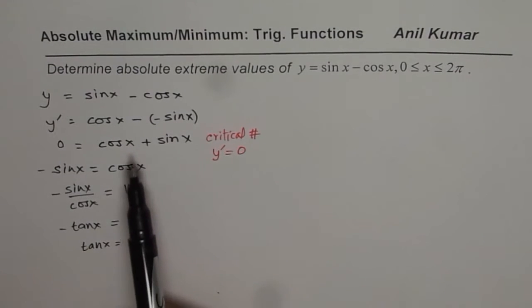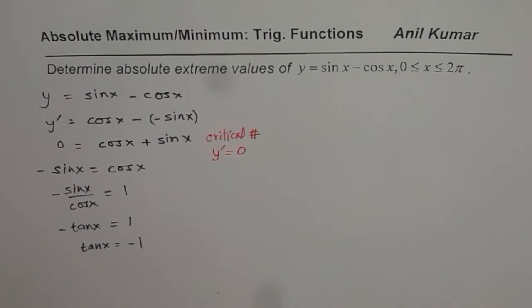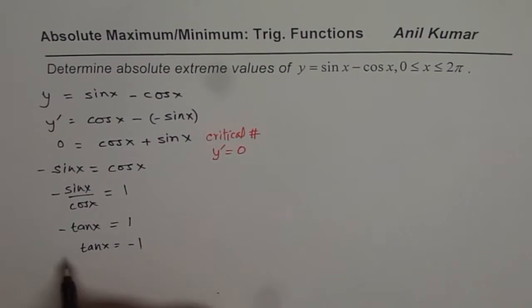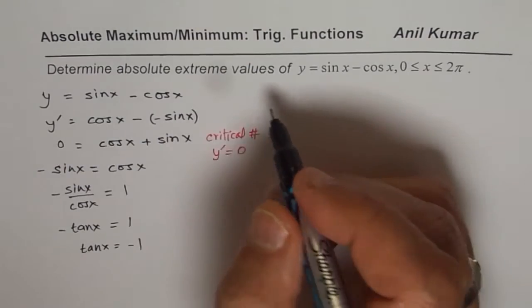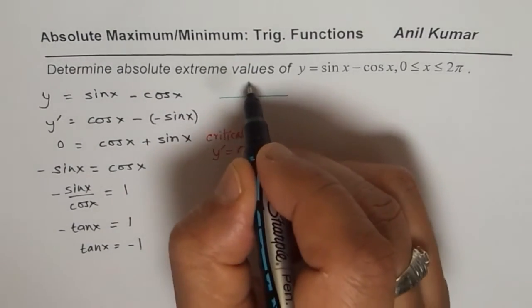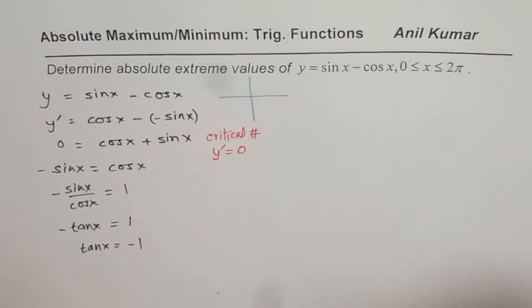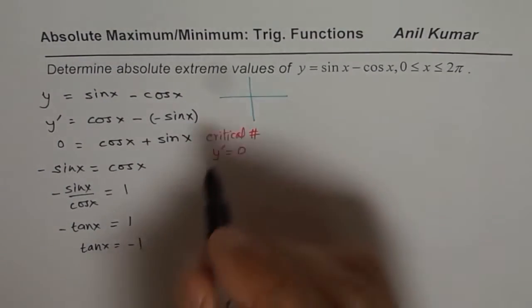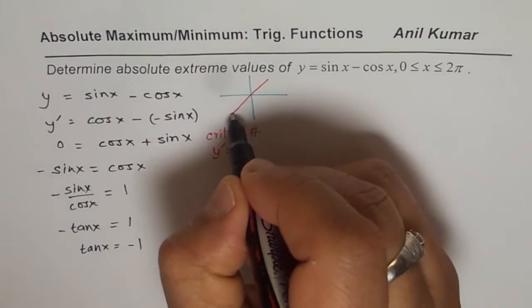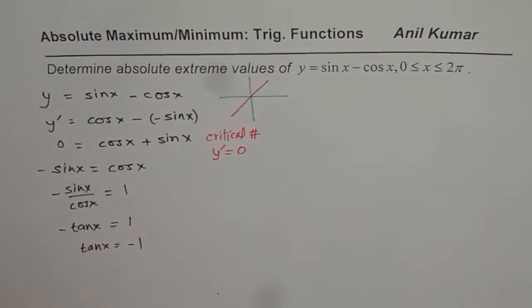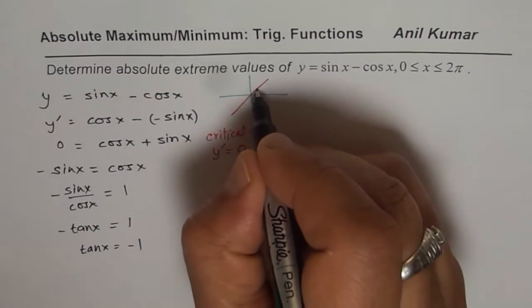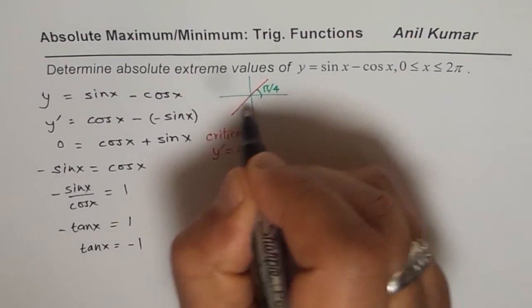That gives tan x equals minus 1. So we have tan x equals minus 1 as our equation. To solve this, let us consider the coordinate system. We know tan is negative in two quadrants, and the acute angle for tan to be minus 1 is pi by 4.